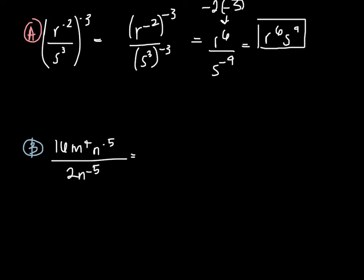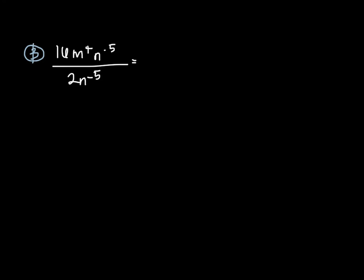Our second problem: 16m to the 4th n to the negative 5th divided by 2n to the negative 5th. We can simplify the 16 over 2 to 8. Then we still have our m to the 4th, but we're subtracting negative 5 from negative 5. So we have n to the 0, which is the same thing as 1, so we just have 8m to the 4th.